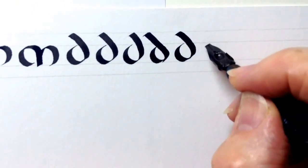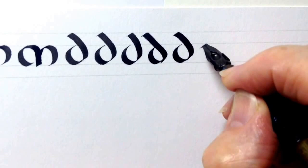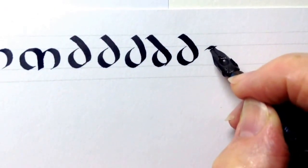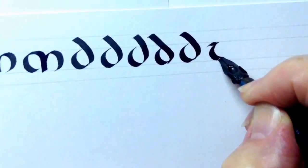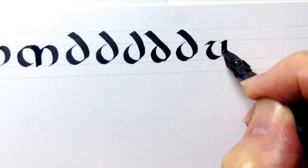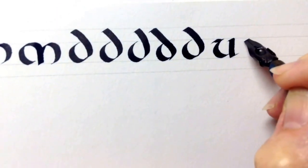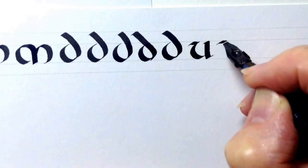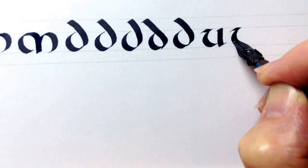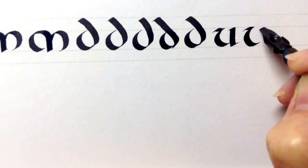And then the last letter form in this family is the letter U, which starts with a little sort of serif, a little tail on the left hand side going to the right.